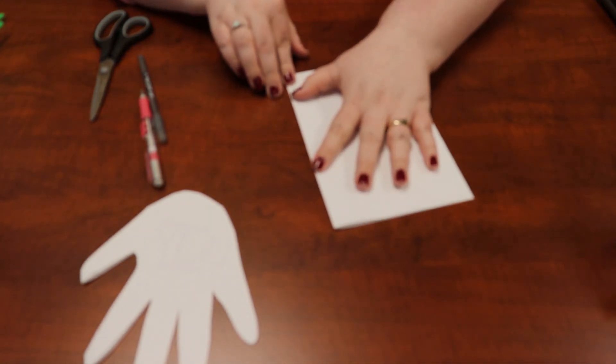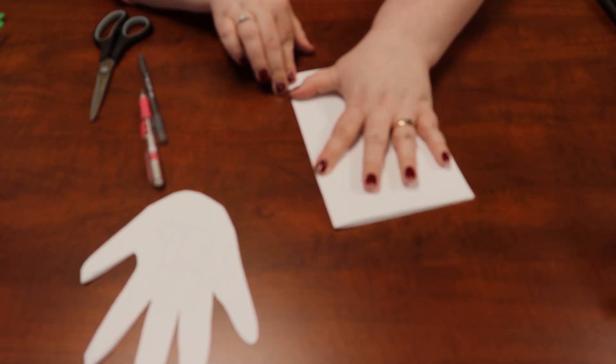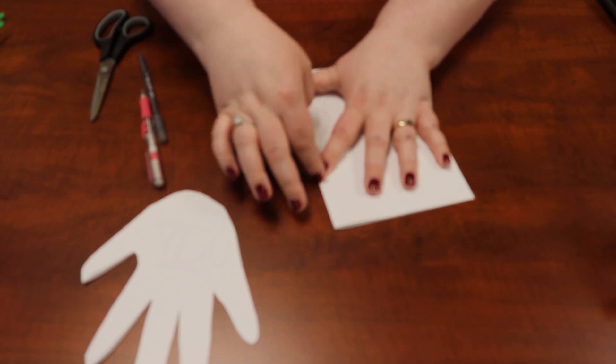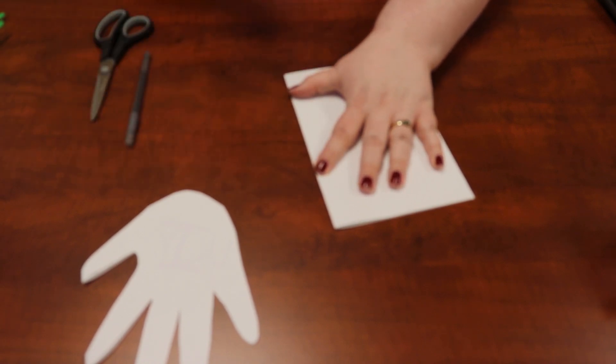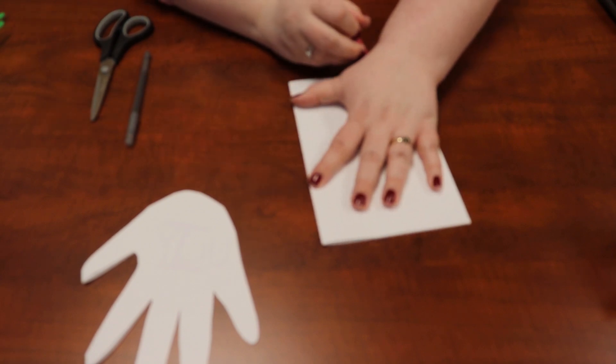We're going to put our thumb and our pointer finger along the edge, so we're not going to cut those here. And then we're going to trace the rest of your hand. I've got my pencil here to trace my hand.